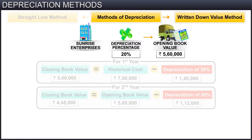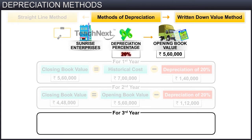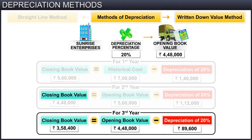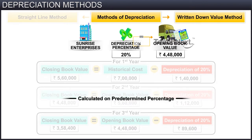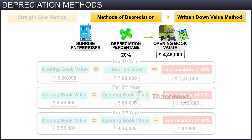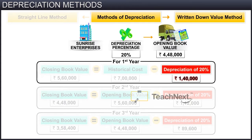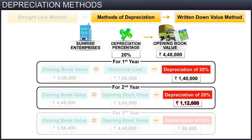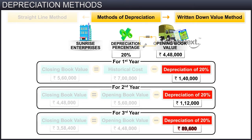Similarly, the depreciation amount for the third year is calculated at 20% on 4,48,000 rupees, giving an amount of 89,600 rupees. In this way, the depreciation amount is calculated for the remaining years up to the originally recorded life of the asset. You will observe that the calculated depreciation amounts are 1,40,000 rupees for the first year, 1,12,000 rupees for the second year, and 89,600 rupees for the third year.